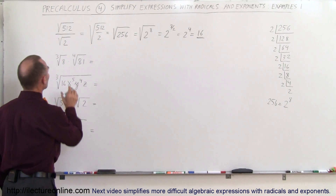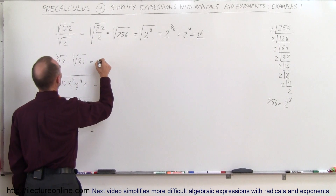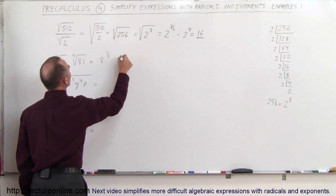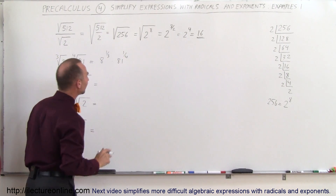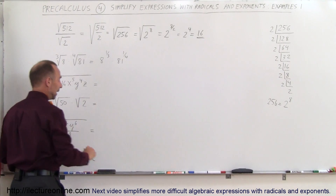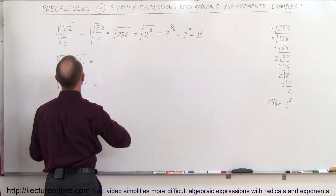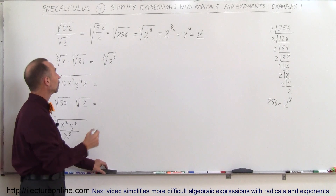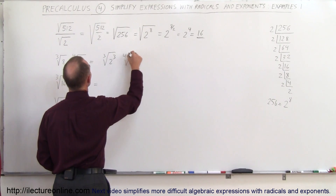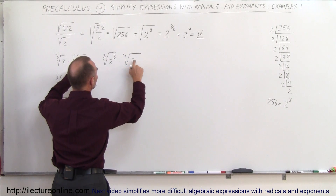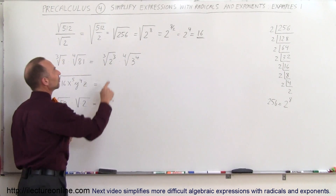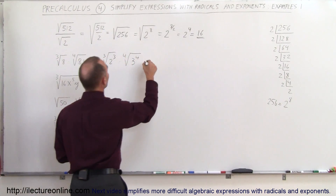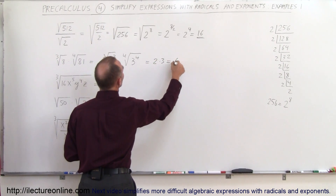When you see something like this, what you want to do is write it as a fractional exponent. This can be written as the cube root of 8 times the 4th root of 81. You can also say this is equal to the cube root of 2 cubed, because 8 of course is 2 cubed, times the 4th root of 81, which can be written as 3 to the 4th power. When the exponent is the same as the root, you can simply take the radical symbol away. Same here — exponent equals the root, you take the symbol away. So this can be written as 2 times 3, which is equal to 6.